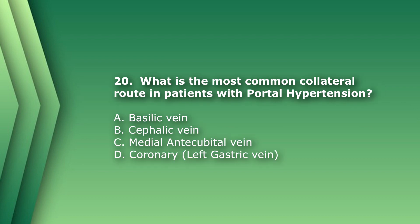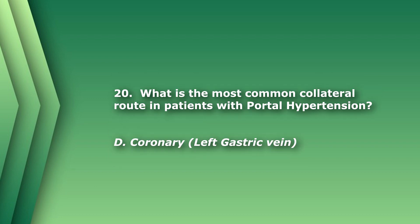Question 21: What is the most common collateral route in patients with portal hypertension? A) basilic vein, B) cephalic vein, C) medial antecubital vein, or D) coronary or left gastric vein. The basilic, cephalic, and medial antecubital veins are veins of the arm. The only correct answer is D) coronary vein.